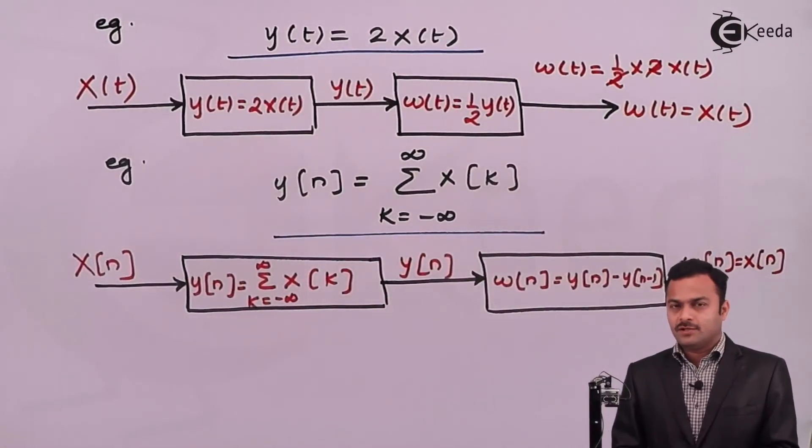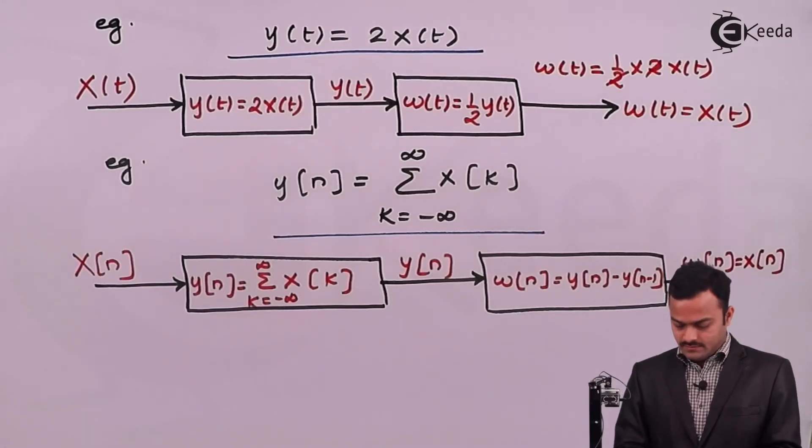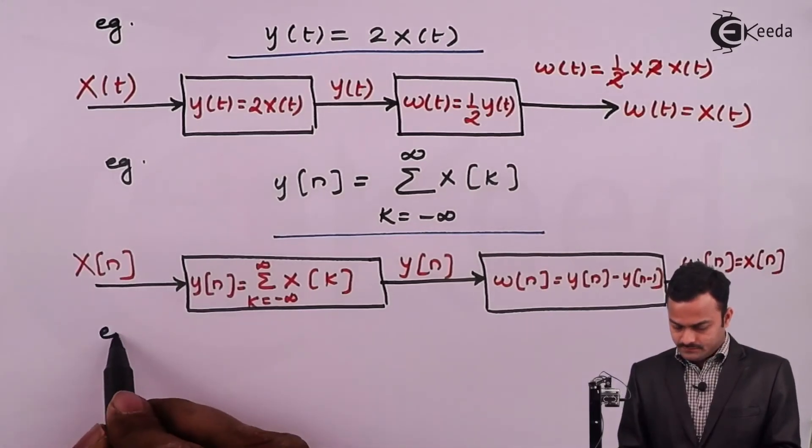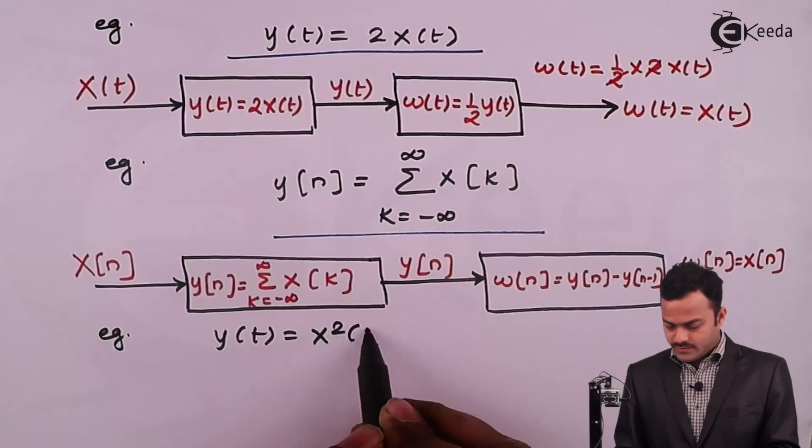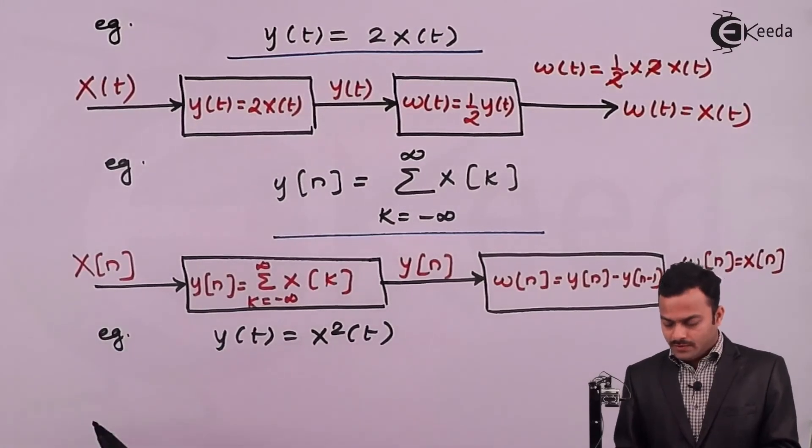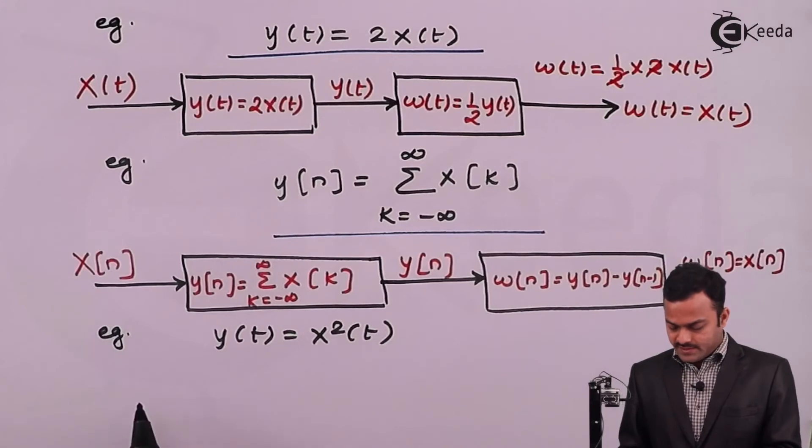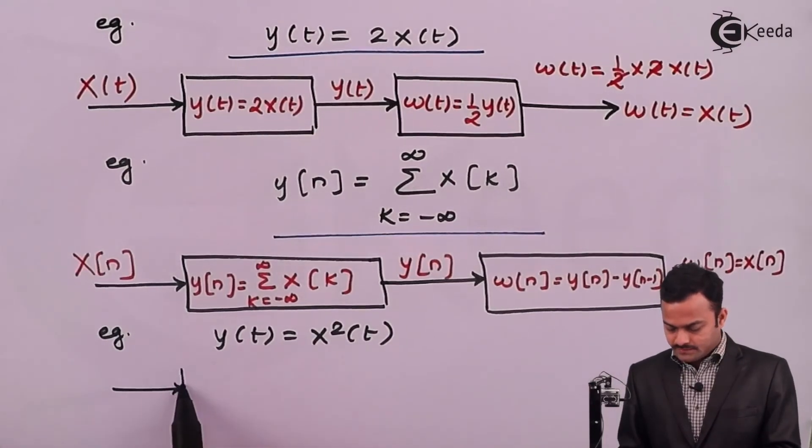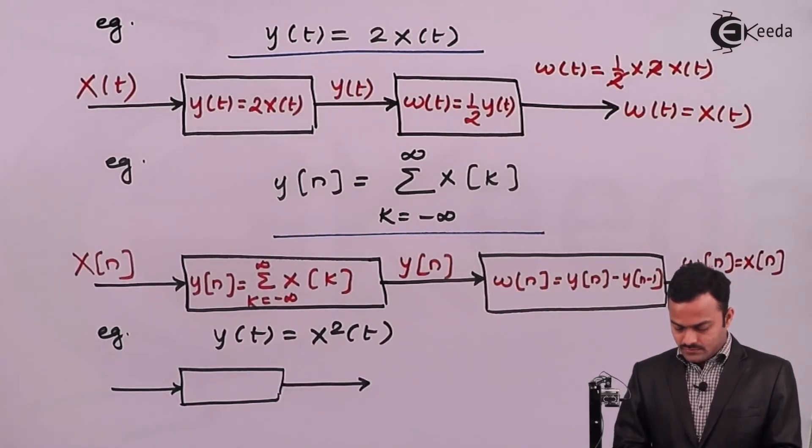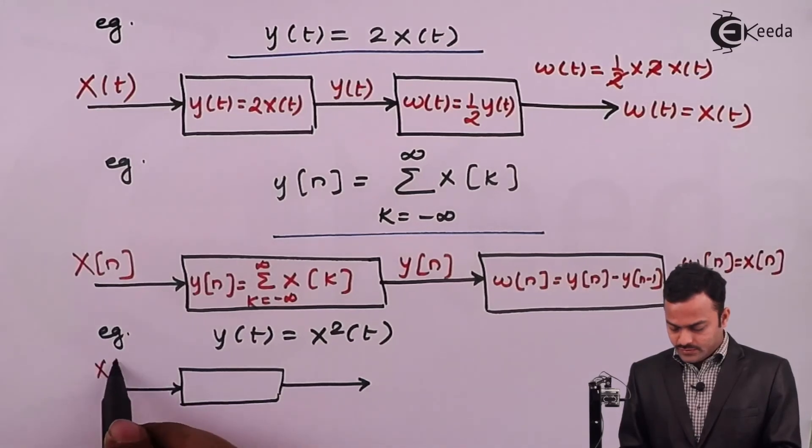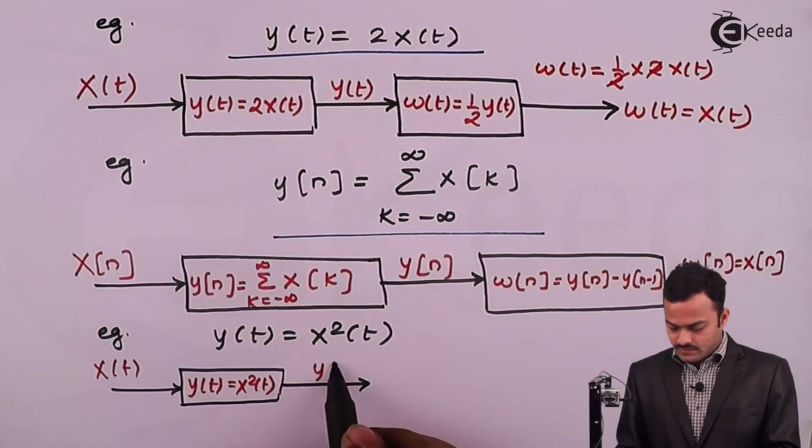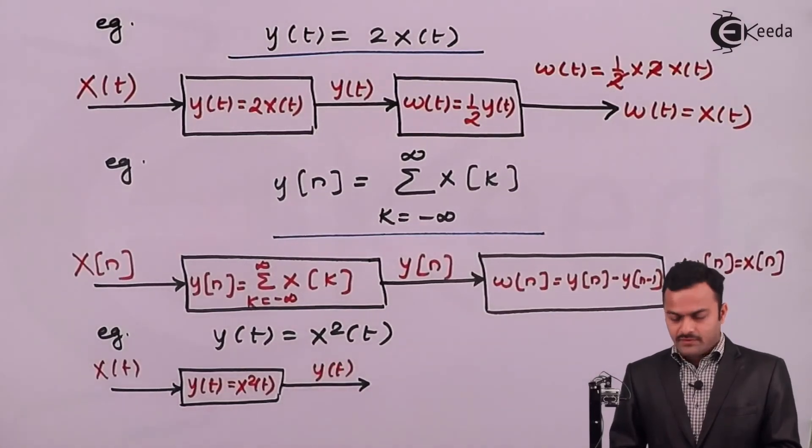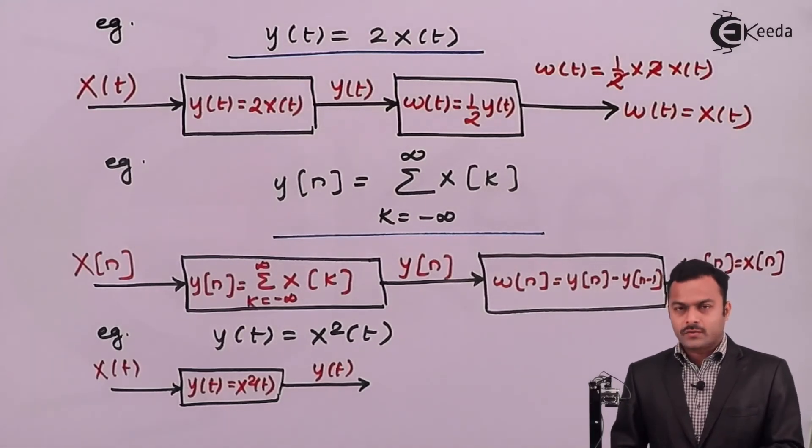Let's take an example where the system will not be considered as inverse. So the example is this: y of t equals x squared of t. So now what will happen? x of t is there, passed through the system which will square the signal. So x of t is the input signal. Job of the system is squaring the signal. Now from this, if I have to get the original signal, I need to do the square root.